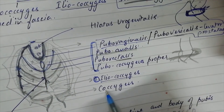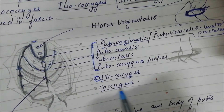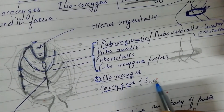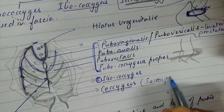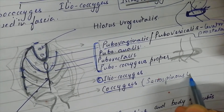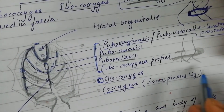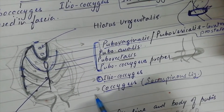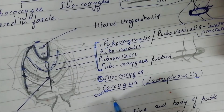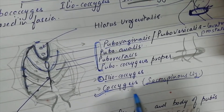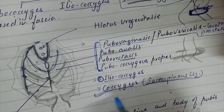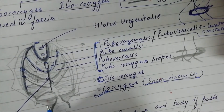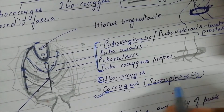The Ischiococcygeus or coccygeus part corresponds to the sacrospinous ligament. We can say that this ligament is the aponeurosis of the Ischiococcygeus or coccygeus muscle, because in human beings this muscle is rudimentary and has been converted into the sacrospinous ligament.